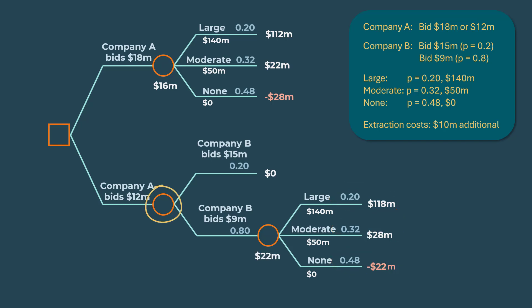Since this is a chance node and not a decision node, we're not going to choose between $0 and $22 million. Instead, we calculate an expected value. So we have 0.2 times 0 plus 0.8 times 22, which gives $17.6 million.